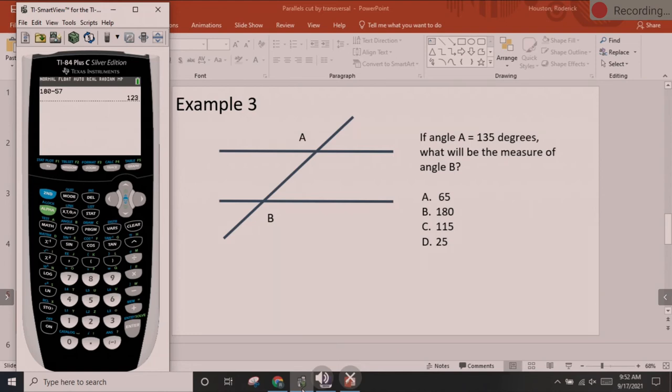It says if the measurement of angle A, if angle A is 135 degrees, what will angle B be? This one is really easy to see because the angle opens up so wide. That is an obtuse angle. That is 135. We see that that is also an obtuse angle. It is also 135.